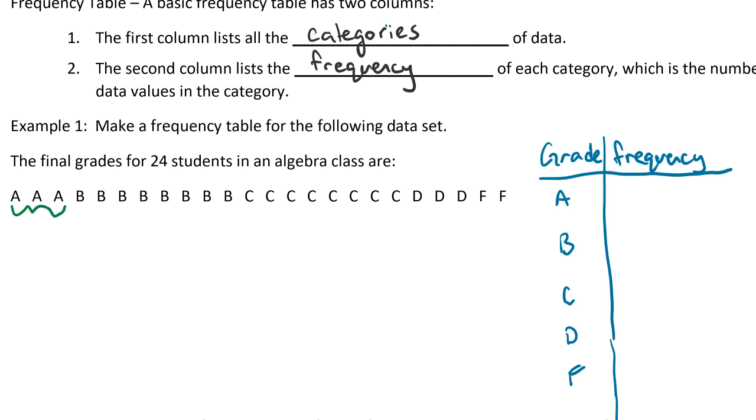So how many A's are there? There's three, so we just put three. Then how many B's are there? Well, there's eight, so we put eight. Same thing for C's, there's eight. There are three D's and there are two F's. So it's just counting up how many are in each category.